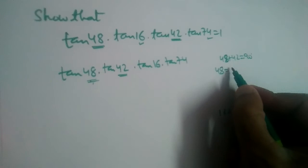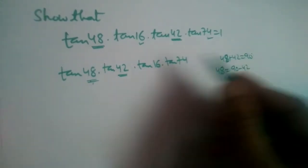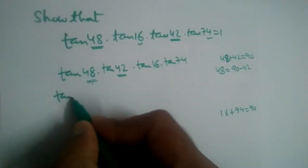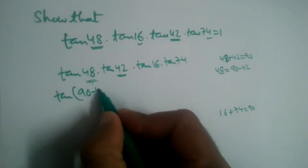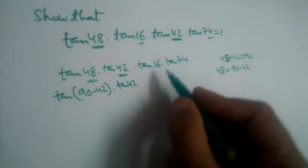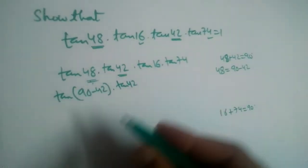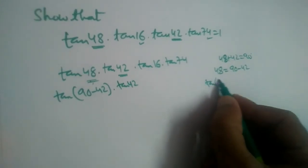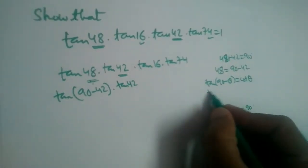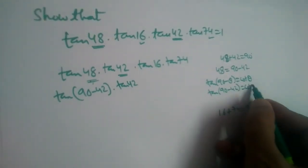48 will become 90 minus 42. 42 goes on the other side becomes minus. So in place of 48 we can write 90 minus 42. This is tan(90° - 42°) multiplied by tan 42°. Let us first simplify this part. tan(90° - 42°) will become cot 42°.